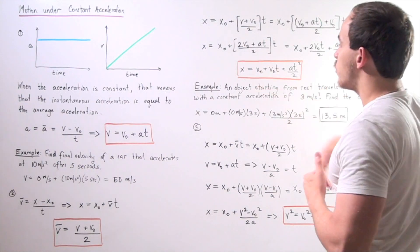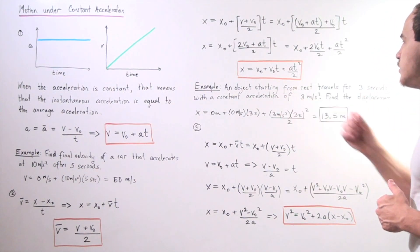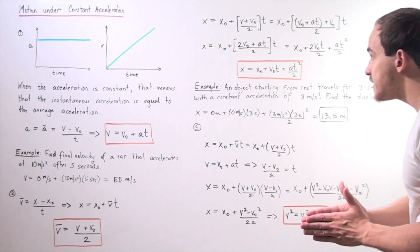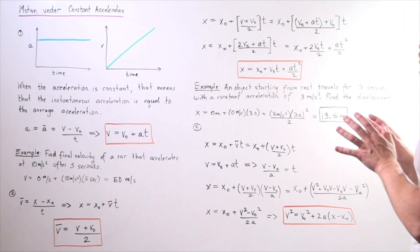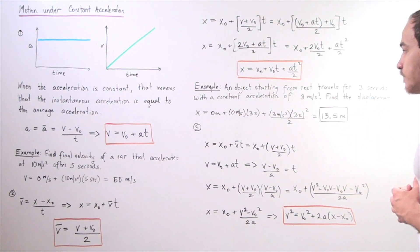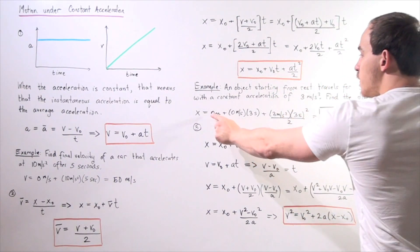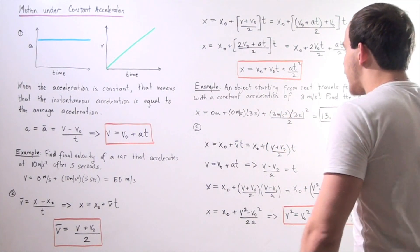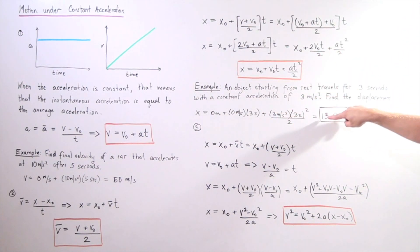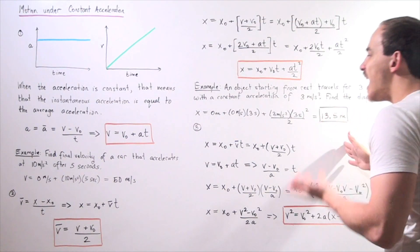All we have to do is replace our x's with y's. Let's do a quick example. An object starting from rest travels for 3 seconds with a constant acceleration of 3 meters per second squared — find the displacement. Assuming x naught is 0 meters and v naught is 0 meters per second, our final position x equals 0 plus 0 times 3 plus 3 times 3 squared divided by 2. That's 27 divided by 2, giving us 13.5 meters as the displacement after 3 seconds under constant acceleration.